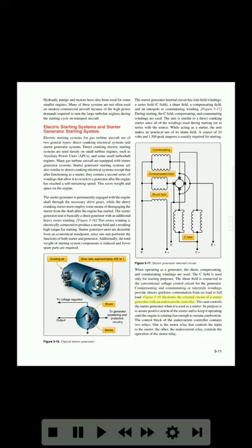Figure 5-18 illustrates the external circuit of a starter generator with an undercurrent controller. This unit controls the starter generator when it is used as a starter. Its purpose is to assure positive action of the starter and to keep it operating until the engine is rotating fast enough to sustain combustion. The control block of the undercurrent controller contains two relays: one is the motor relay that controls the input to the starter, and the other is the undercurrent relay, which controls the operation of the motor relay.